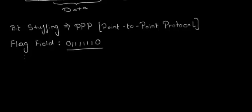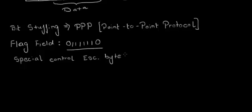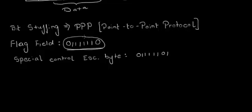The point-to-point protocol defines a special control escape byte, and the special control escape byte is 01111101. So whenever a value equaling the flag field — which defines the end of the frame — occurs in the data, the point-to-point protocol uses the special control escape byte so that this flag field value is not confused as the end of the frame.